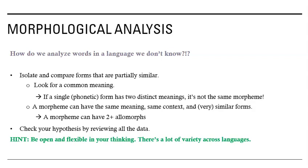We're going to compare the translations and the words, and we're going to look for forms that are partially similar. We're going to look for a common meaning. Remember that if a specific form has two different meanings, it's not going to be the same morpheme. However, if a morpheme can have the same meaning in the same context and have very similar forms, those are called allomorphs — when there are two forms of one morpheme. After we isolate and compare and think we've figured out what the morphemes are, we're going to check our hypothesis by reviewing all of the data, because linguistics is all about finding patterns.